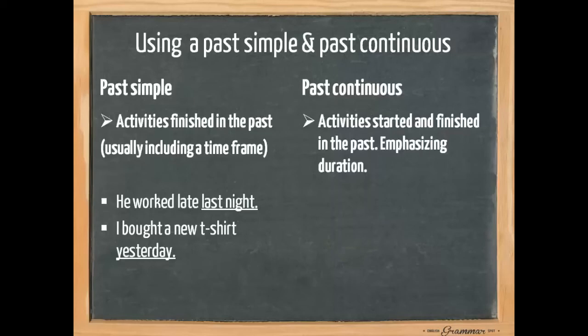A past continuous is used for activities started and finished in the past, but we want to emphasize duration. So we want to show the other person, the other listener or reader, that it lasted for quite some time. For example, he was working all night. So we want to emphasize that it lasted the entire night.